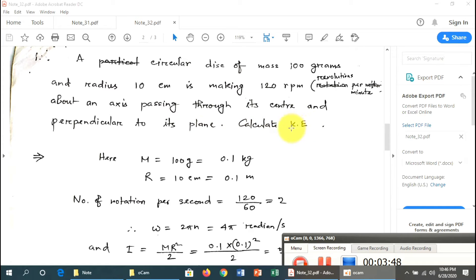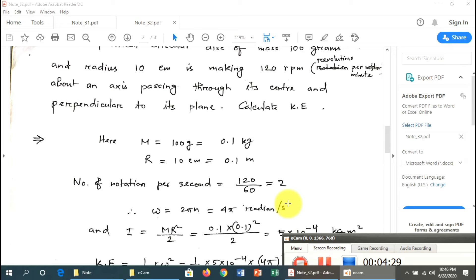Here, m = 0.1 kg (converting from 100 grams), R = 0.1 meter (converting from 10 centimeters). The number of rotations per second needs to be converted from revolutions per minute to radians per second.